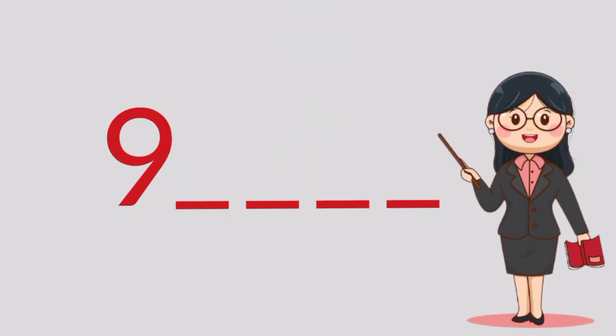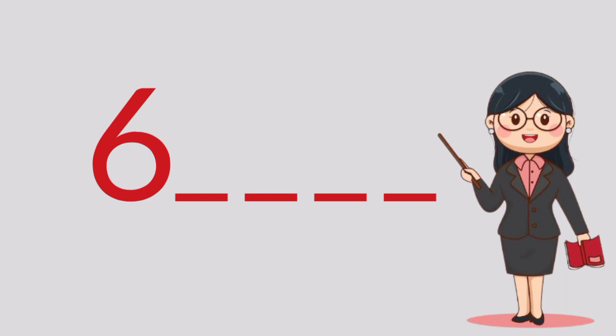Our third number is 9. So what number comes after 9? It's the number 10. What comes after 6? It's the number 7.